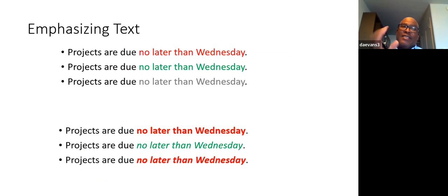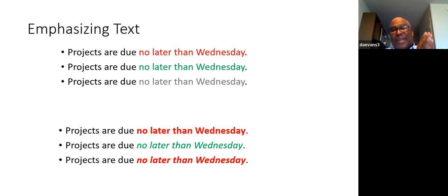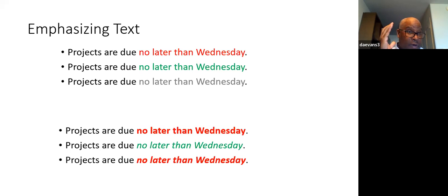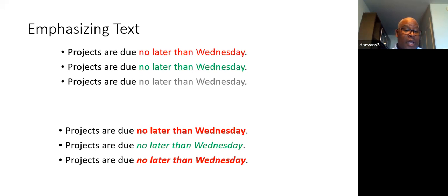One of the things accessibility people always say is: don't use color alone to convey information. If you want to use color, that's fine — I'm not the color police. But don't use color alone. If you're going to use color, give the viewer some other visual cue besides just color — either bold something, put it in italics — do something to convey that information, not just using color alone.